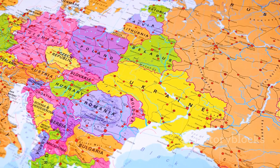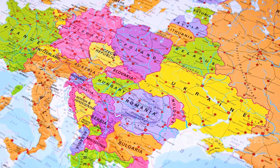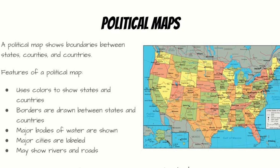Political maps ignore nature's markers and instead focus on man-made boundaries. They mark the boundaries of countries, states, and cities, highlighting the invisible lines that divide us — very important in understanding geopolitics and international relations.